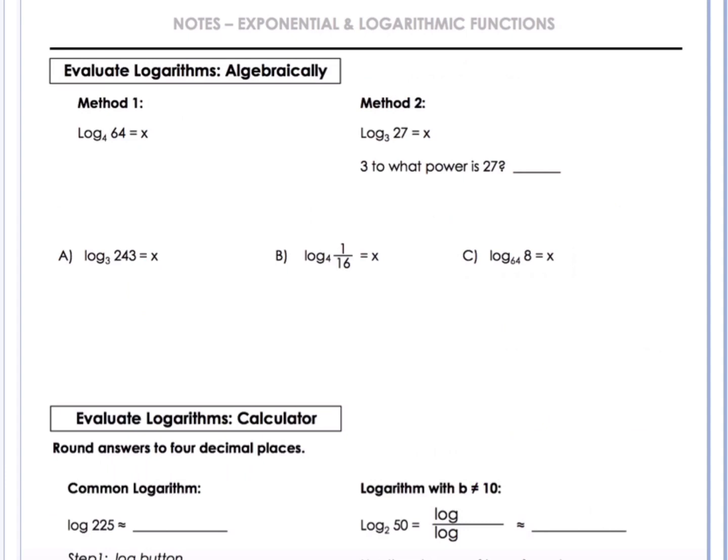We're going to evaluate logarithms algebraically. Two different methods. Method 1, I'm going to rewrite it into exponential form. So 4 to the x power equals 64. And then if you watched the lesson yesterday on solving exponential equations with same base, you could rewrite this as 4 to the x power equals 4 to the third power. And using same base equality, we know that the exponents will equal each other, so we can have x equals 3. And we solved our problem there. That's one method.